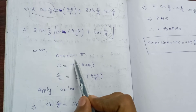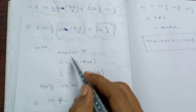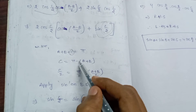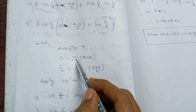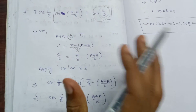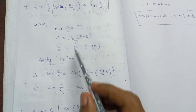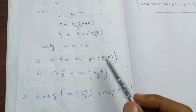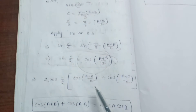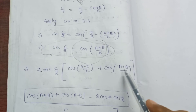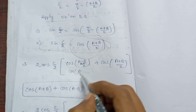We know A plus B plus C equals pi, so C/2 equals pi/2 minus (A+B)/2. Therefore sin(C/2) equals sin(90 degrees minus (A+B)/2) equals cos((A+B)/2). Substituting back, we have 2·cos(C/2)·[cos((A-B)/2) plus cos((A+B)/2)].